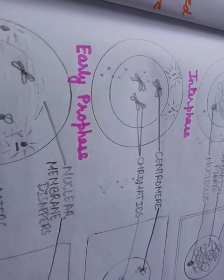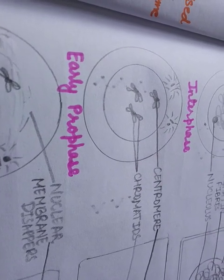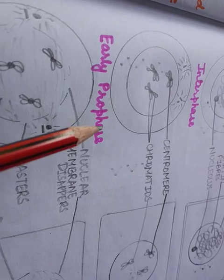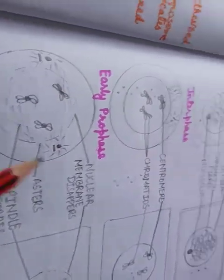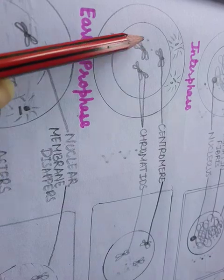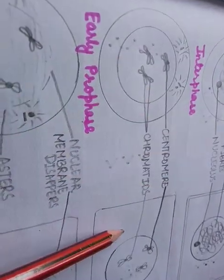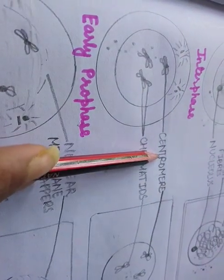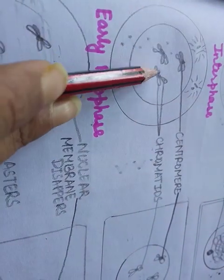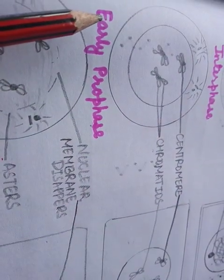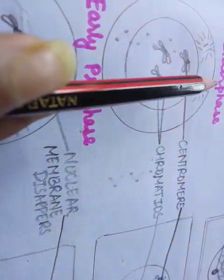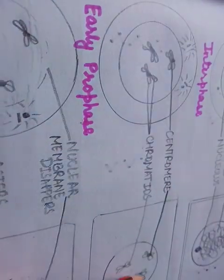The first phase is prophase. In your book, prophase is divided into two phases: early prophase and late prophase. In the animal cell, the chromosomes become short and thick and are clearly visible — this applies to both animal and plant cells. You can see that the centromere is attached to the two chromatids. Each chromosome is already duplicated and has two chromatids. The two sister chromatids remain attached to each other at a small point known as the centromere.